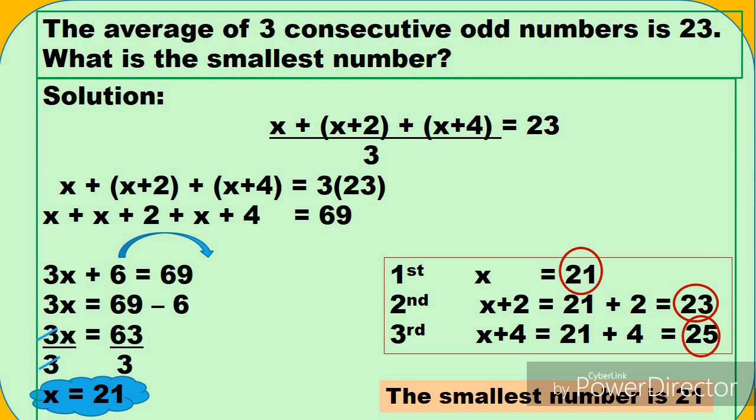So mag-a-assign tayo ng variable dun sa unang number, which is X. And then mag-a-add tayo ng 2 para sa pangalawang odd integers. Mag-a-add tayo ng 4 para sa pangatlong odd integers. So mayroon tayong equation ngayon. X plus X plus 2 plus X plus 4 equals 23. I-cross multiply natin yung 3 at saka 23. So 3 times 23. And then combine like terms.